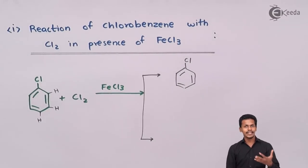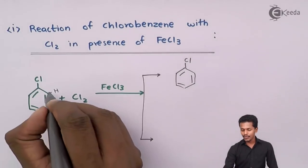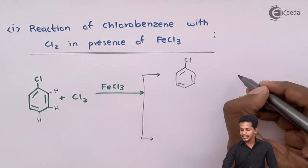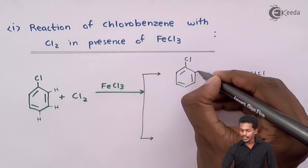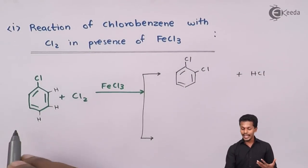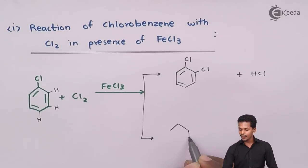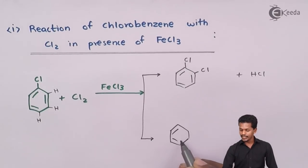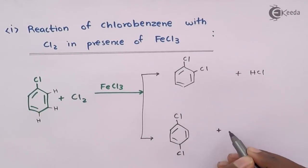We have discussed that ortho and para positions are more preferable for substitution reaction. One possibility is that one H is replaced, forming the byproduct HCl, and the remaining chlorine atom attaches at the ortho position. Meanwhile, there is also the possibility that the chlorine atom replaces the hydrogen at the para position — giving a para-substituted product.